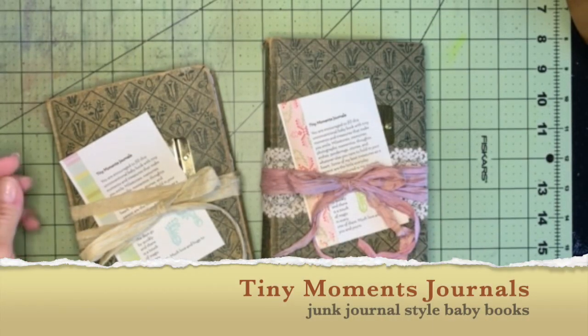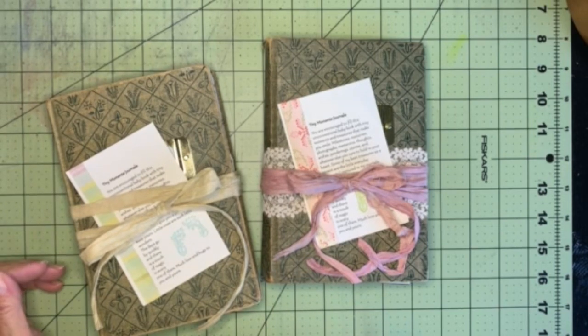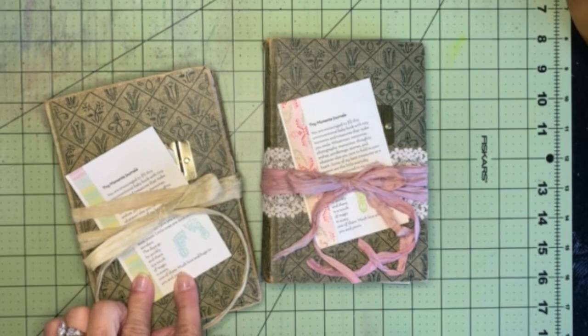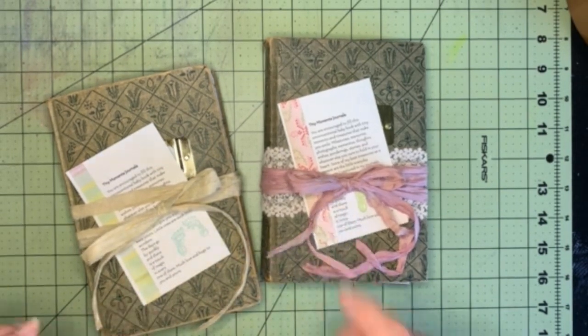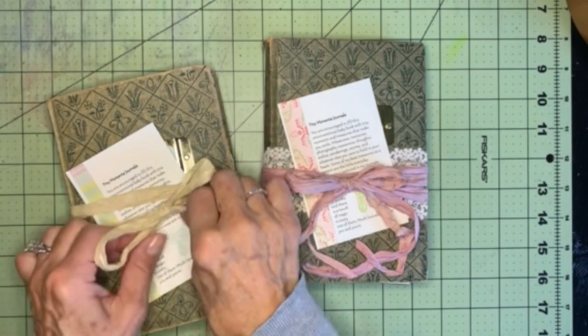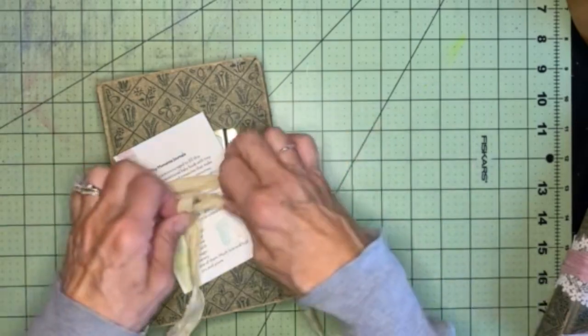There are two baby journals that I made for Alyssa and for Kate, for baby Mac and for baby Josie. So I wanted to do a flip through so I remember how I made them. So I'll start with Mac's.